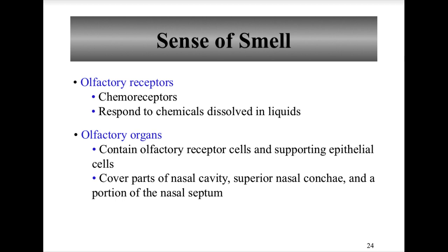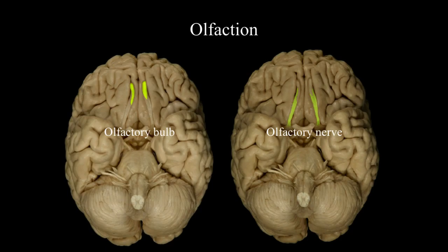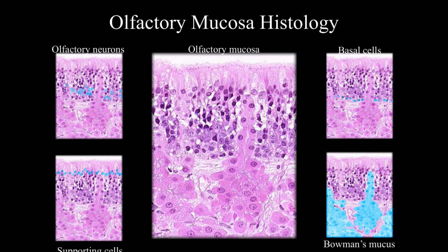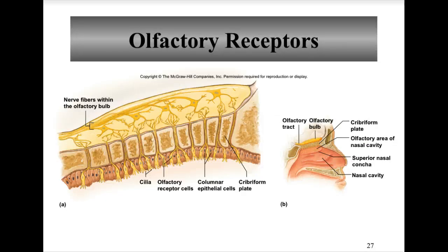Olfactory organs include the olfactory epithelium in the upper nasal cavity of the nose, located on the superior nasal concha. You can see the olfactory bulb and olfactory nerve, as well as olfactory mucosa histology, which includes supporting cells and Bowman's mucus glands. The olfactory receptors include cilia olfactory receptor cells, columnar epithelial cells, the cribriform plate, and the olfactory bulb.